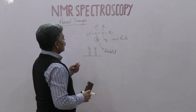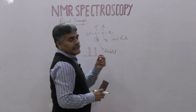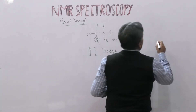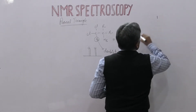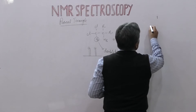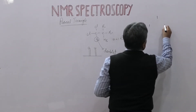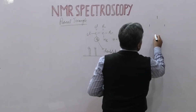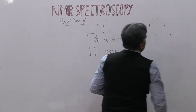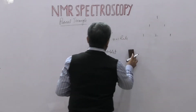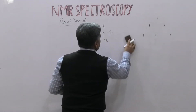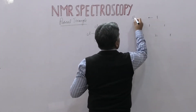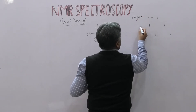For singlet, doublet, triplet, and quartet, the shape and intensity of these lines can be determined by Pascal triangle. So for singlet we have one row, and here we have the rows for doublet and triplet.